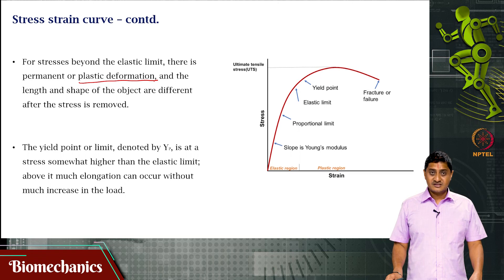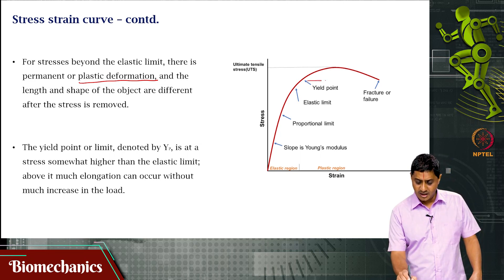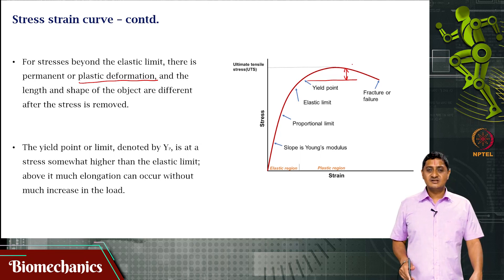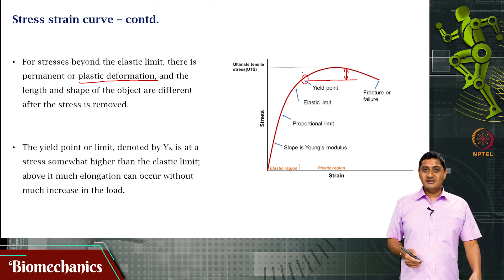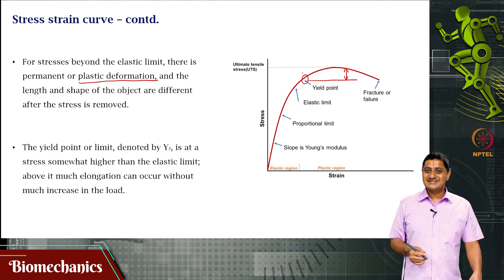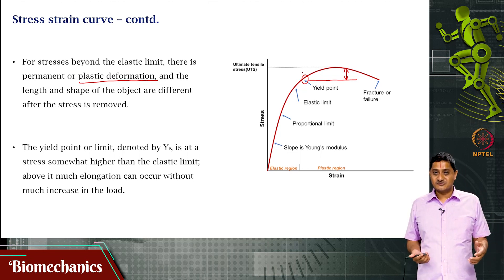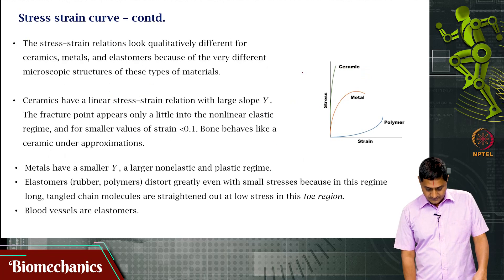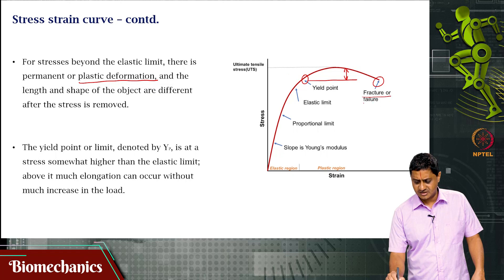If you further apply stress beyond the elastic limit, there is a particular point at which a lot of elongation can happen with a very small change in stress. For very small changes of stress, the elongation will be very high. This is the yield point. From this point onwards, if you want greater elongation, you only need to apply very small amounts of stress. Earlier you had to apply large amounts of stress, but once you reach the yield point, that changes dramatically. Of course, if you keep pushing it beyond a limit, there is fracture or failure of the material.